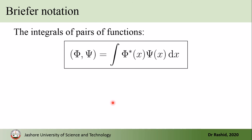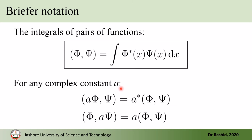Before going into the details, we introduce a briefer notation. The integral of psi-star times phi is written with a shorter bracket notation as (phi, psi). If a complex constant a is multiplied with the first function phi, when taken out we must take its complex conjugate. But if a is multiplied with the second function psi, we can simply take it out directly.